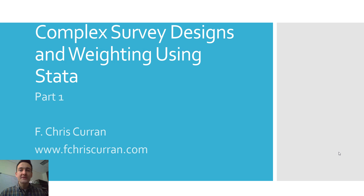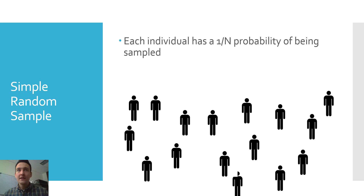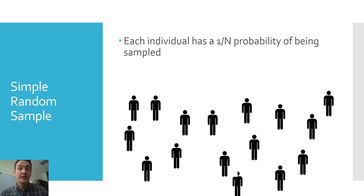To begin with, we're going to think about the commonplace that research designs often jump off of, and that's the simple random sample. Through your initial research classes and previous experience in the field, you've heard that the random sample has a lot of value because it allows for representativeness or generalizability to a broader audience. A simple random sample basically means that every individual in the population has the same or equal probability of being sampled. We can think of that as each individual having a one-over-N probability of being sampled, where big N represents the population size. The great virtue of a simple random sample is that we get representativeness — a sample we can use to draw conclusions about the broader population.